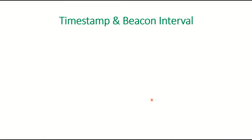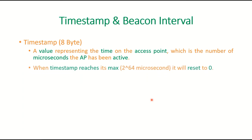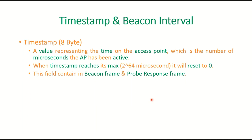Timestamp has a length of 8 bytes. This value represents the time on the access point — specifically, the number of microseconds the AP has been active. When this timer reaches its maximum value of 2 to the power of 64 microseconds, it resets to zero. The timestamp field is contained in both the beacon frame and the probe response frame.